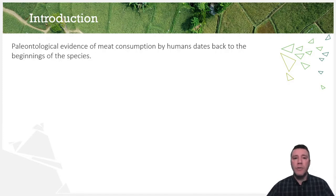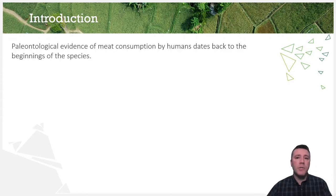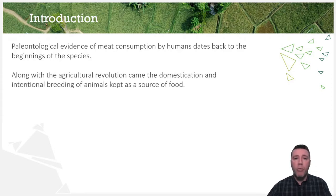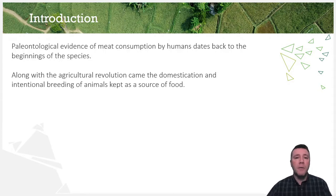Tens of thousands of years ago, our ancestors were primarily hunter-gatherers and worked in organized hunting parties for animals such as bison and deer. But it was the domestication of animals beginning approximately 12,000 years ago that allowed for the production of meat and the breeding of animals specifically for that purpose. Animals that we now rely upon as primary sources of meat were domesticated in conjunction with the development of early human civilizations.